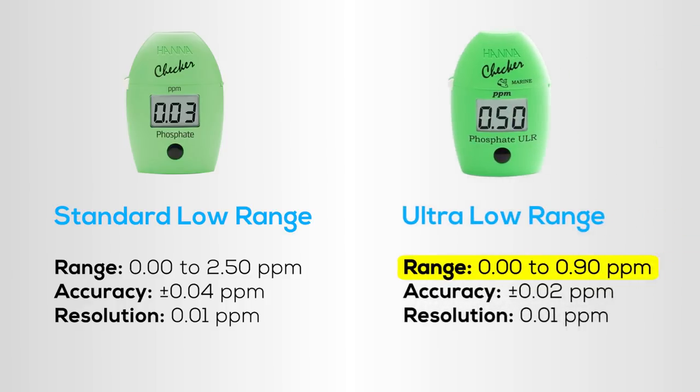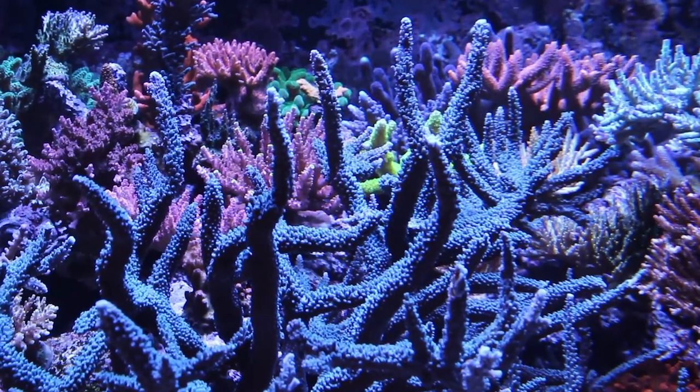The Ultra Low Range Checker, having a smaller window of measurement and a higher degree of accuracy, means that the ULR checker will be better for those who are really trying to draw a bead on their phosphates and get their levels down to zero, primarily SPS growers.